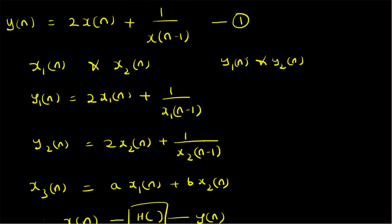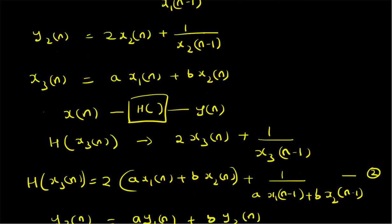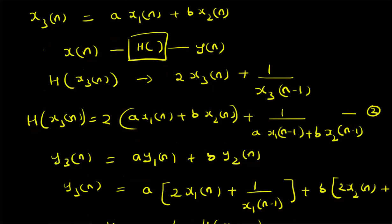To summarize: we considered the system y(n) = 2x(n) + 1/x(n-1) and verified its linearity. We defined two inputs x1(n) and x2(n) with corresponding outputs y1(n) and y2(n), then defined a new input x3(n) as a linear combination of the two inputs. We computed the output h(x3(n)) to be 2 times (a·x1(n) + b·x2(n)) plus 1 by (a·x1(n-1) + b·x2(n-1)).